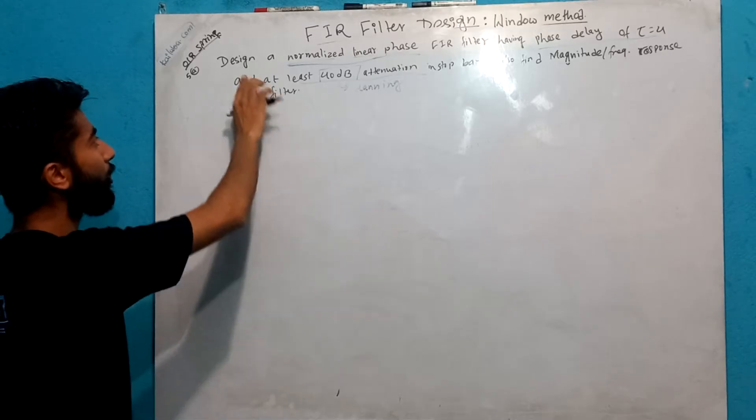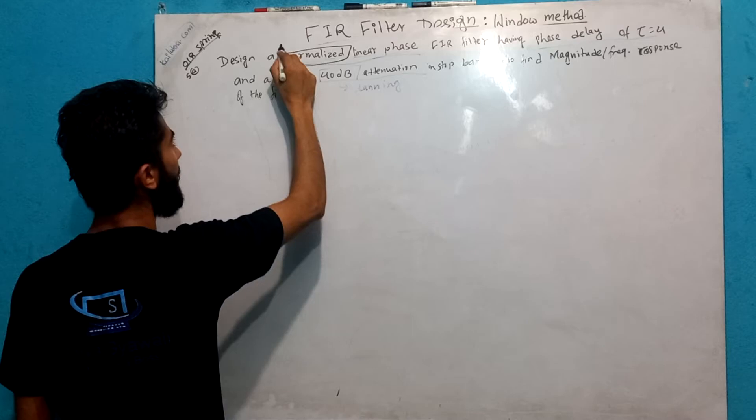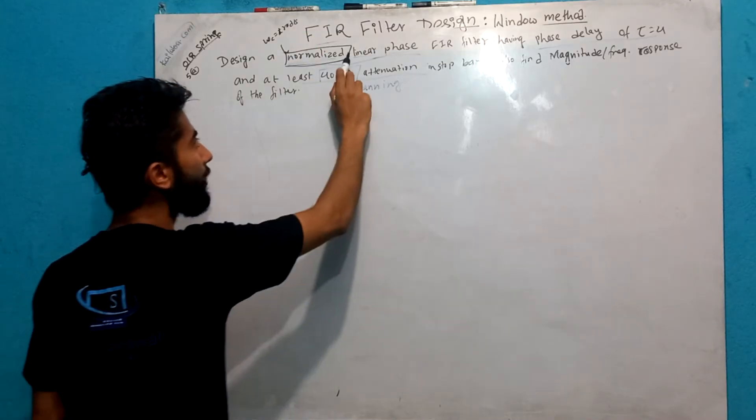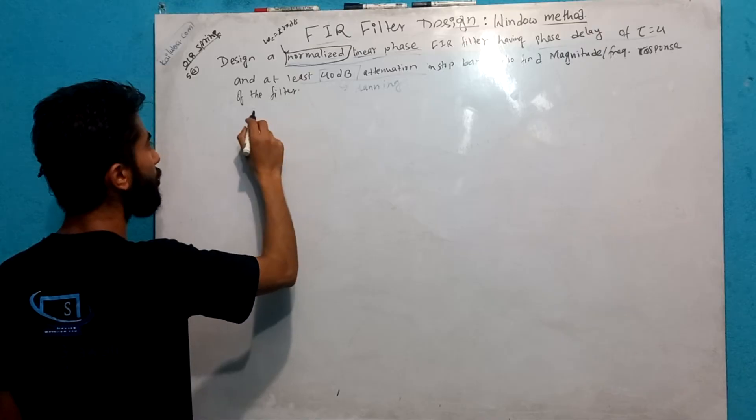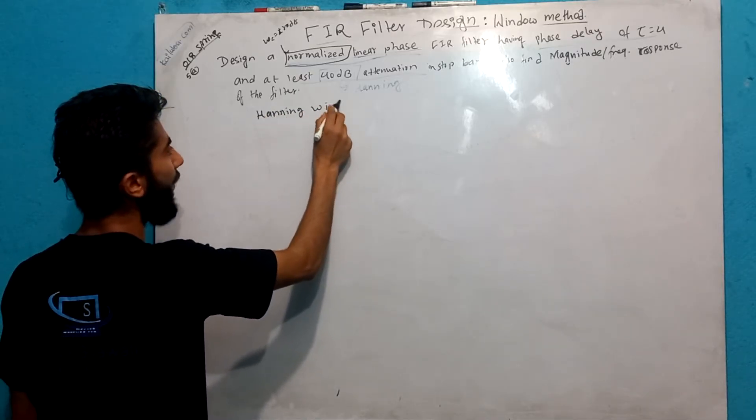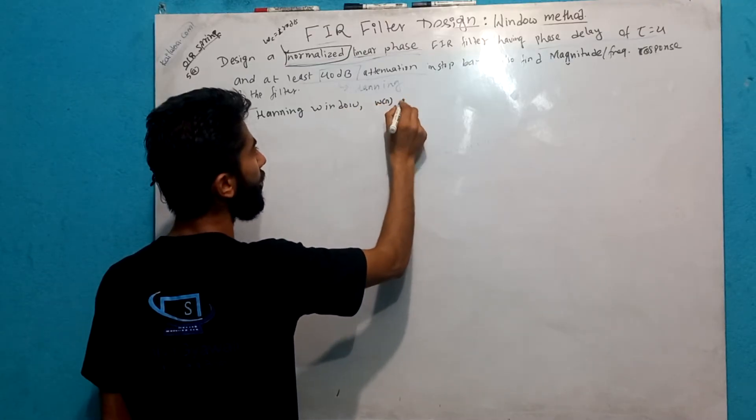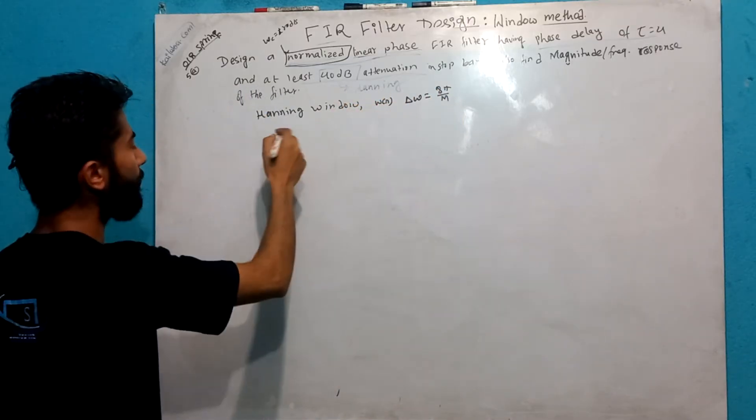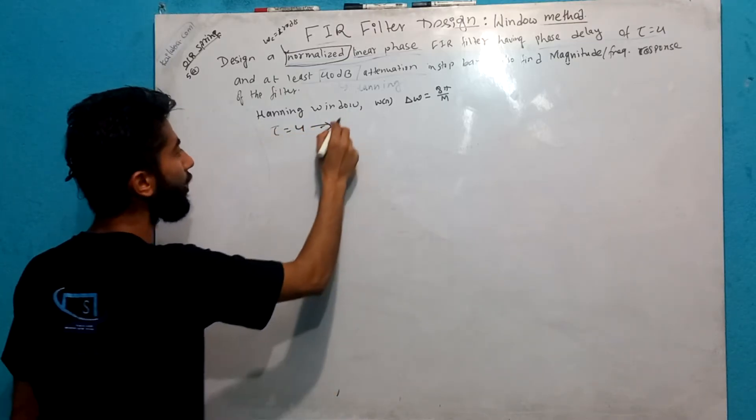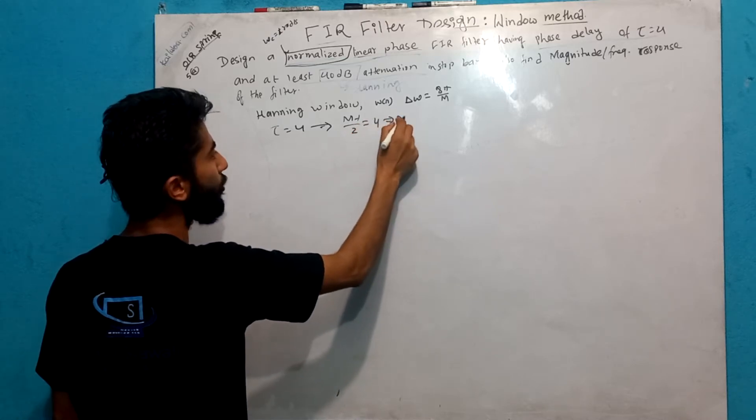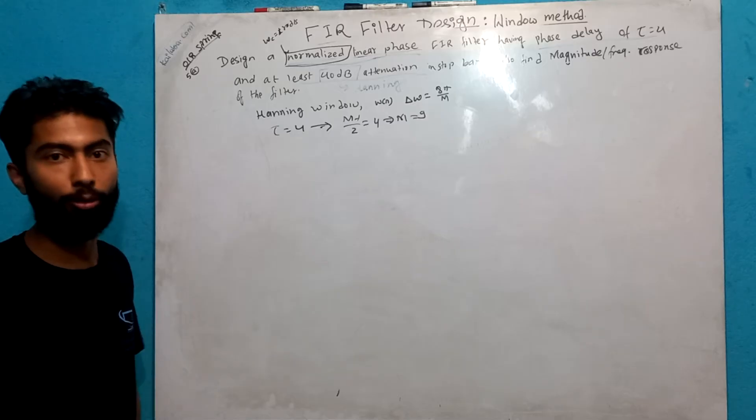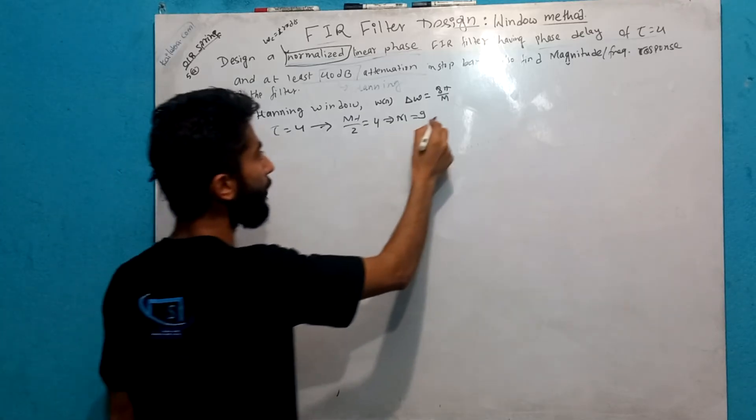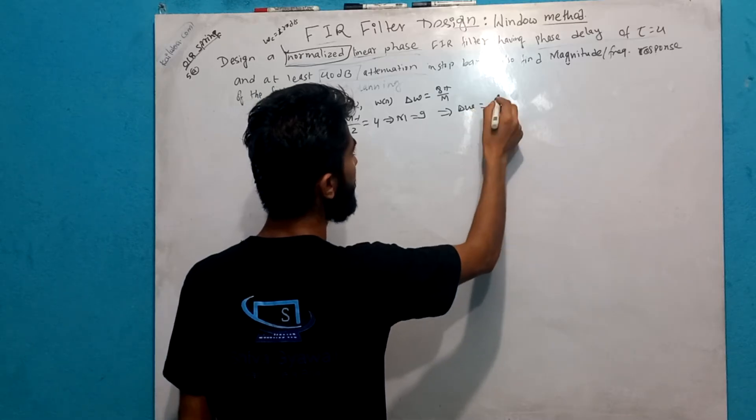The omega c equals to 1 radian per second with linear phase. So first, this is the Hamming window. For the phase delay, tau equals to 4 seconds equals minus 1 by 2 times N minus 1, so N equals 9. I will find out the value of the del omega, which is 8 pi by 9.